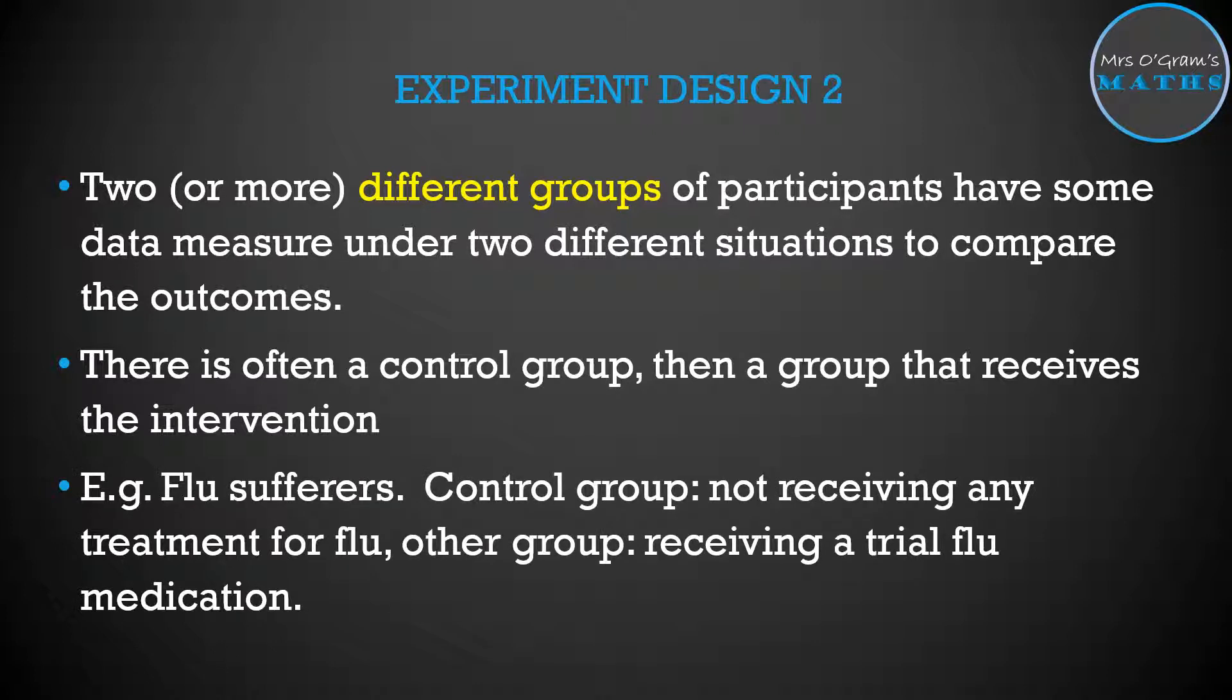For example, we could apply this to people suffering from the flu. We might have a control group of the people that don't receive any treatment for the flu. We would expect there to be some kind of improvement. Maybe they're measuring something like white blood cell count in the flu sufferers and seeing if it improves or something like that. Then the other group would be the flu sufferers that are being given some kind of trial flu medication to see if it can help them recover from flu faster.